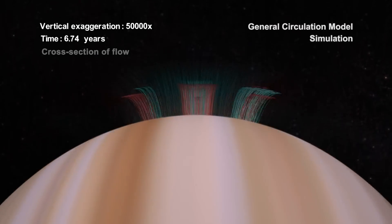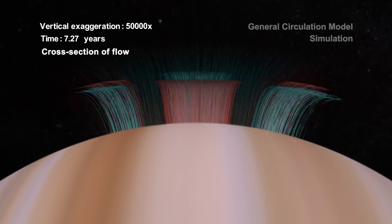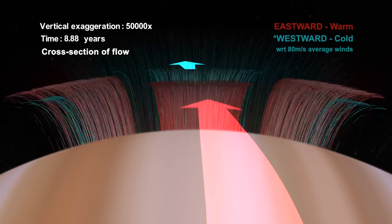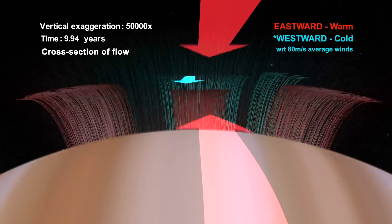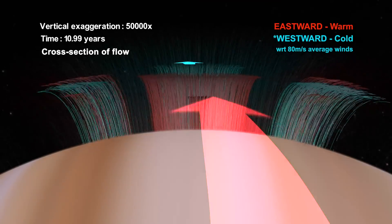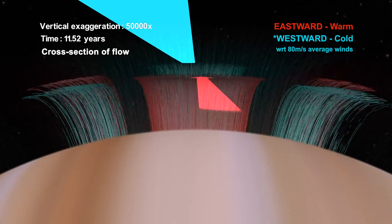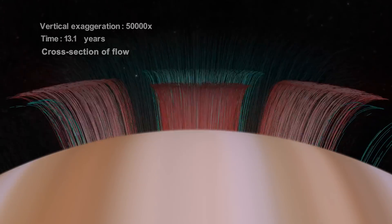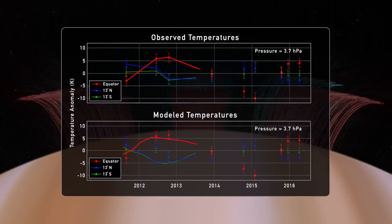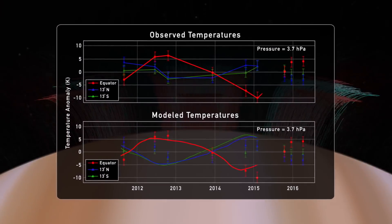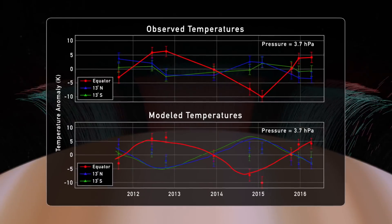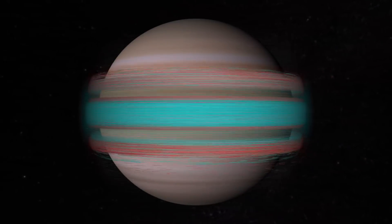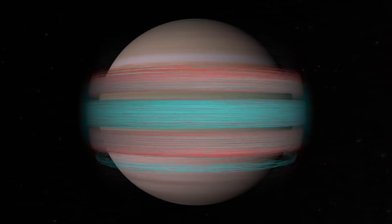The waves propagate upwards from the clouds and force the winds in the stratosphere to change direction, going from eastward to westward approximately every four years. Our model was able to reproduce the behavior of the QQO, but was also able to reproduce temperatures from the observations, and both of those together give us a lot of confidence that our model is very accurate in what's driving the QQO.